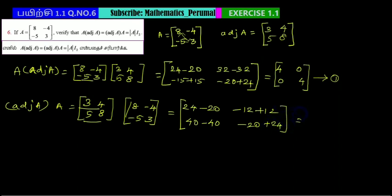This equals [4, 0; 0, 4]. For the determinant of A: 8 times 3 equals 24, minus -5 times -4 equals plus 20, so determinant equals 4.